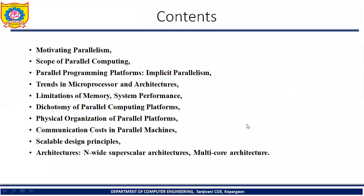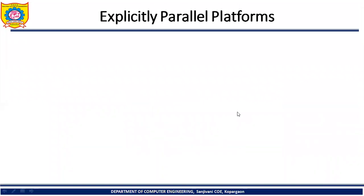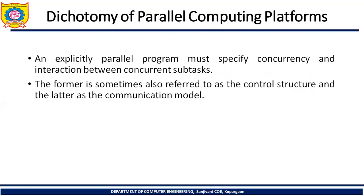In today's lecture we will see another very important topic of unit number one, that is explicit parallelism — the dichotomy of parallel computing platform, also called the explicit parallel platform. An explicitly parallel program must specify concurrency and interaction between concurrent subtasks. The former is sometimes referred to as control structure and the latter as communication model.